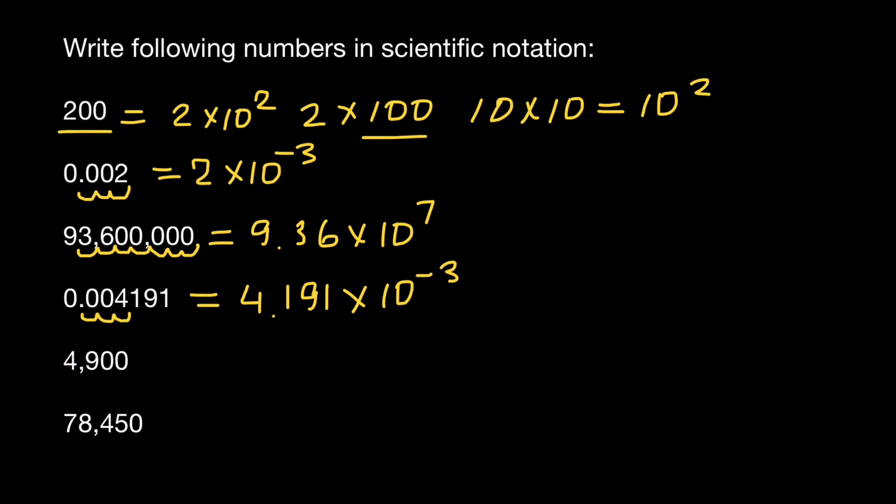Next number, 4,900. This would equal 1, 2, 3, 4.9 times 10 to the power of 3.